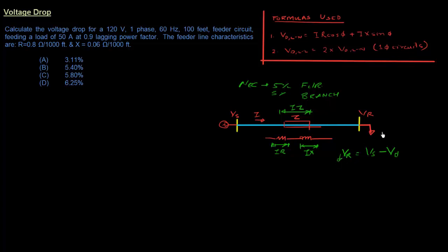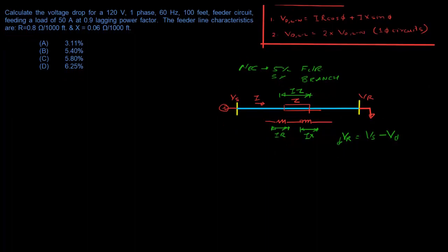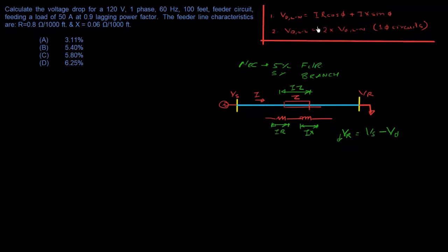If the voltage drop value is really high, the receiving-end voltage becomes really low and equipment might not function properly. That's why we do a voltage drop calculation to make sure it's within acceptable limits. The best way to understand and derive these formulas is to look at a vector diagram of what's really happening.